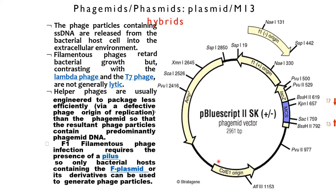The helper phage are usually engineered to package less efficiently via a defective phage origin of replication than the phagemid, so that the resultant phage particles contain predominantly phagemid DNA.